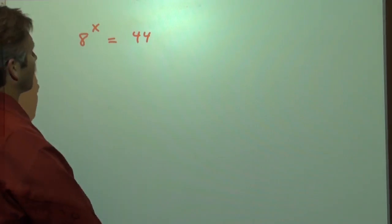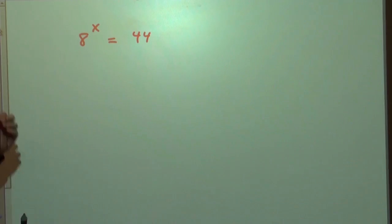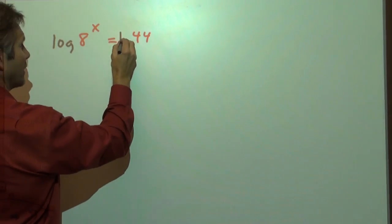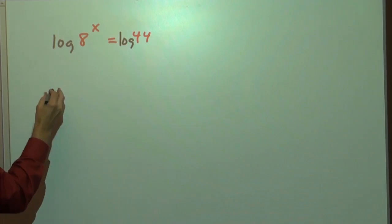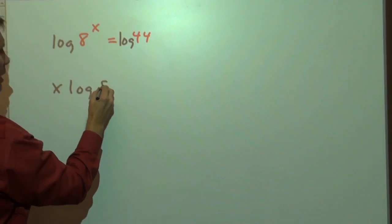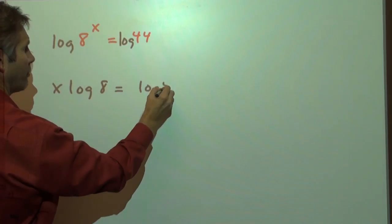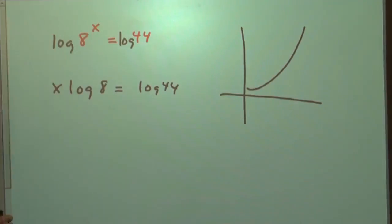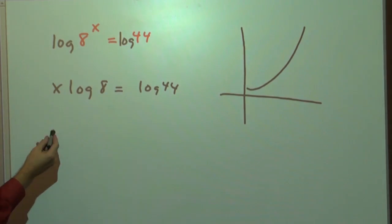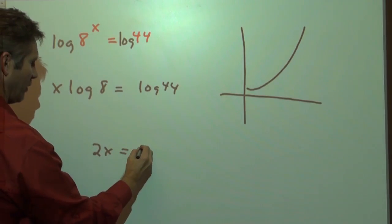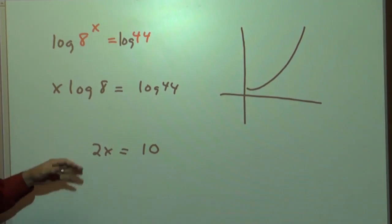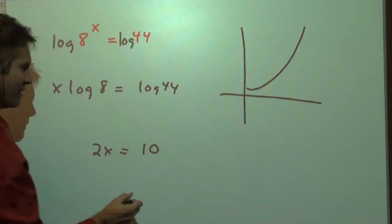If you recall from the review of logarithms, if we want to take this exponential and solve for x, we use a logarithm — either a natural log or a common log. We take the common log of both sides, so x comes in front: x times the log of 8 equals the log of 44. We've taken a function that was originally exponential and made it into a linear function — a coefficient times x equals another number. We've made it linear by using the inverse function, and that's the idea.